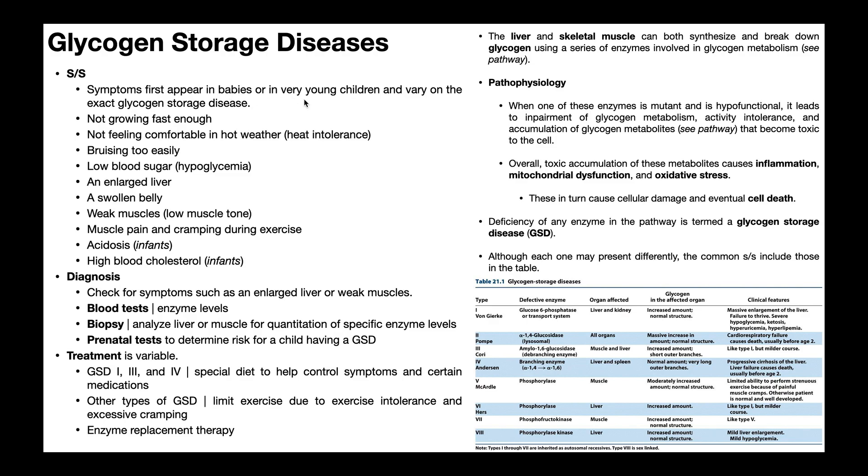Symptoms first appear in babies or in very young children. Glycogen storage diseases are going to be pediatric conditions because that's normally where the symptoms begin to manifest. Usually the children are not going to grow fast enough. They're going to have heat intolerance and not feel comfortable in hot weather. They'll bruise easily, have hypoglycemia chronically, so low blood sugar. A lot of these conditions are going to result in an enlarged liver. They can also have a swollen belly, and they're also going to tend to have weak muscles and low muscle tone because not only is the liver affected by this, but also the skeletal muscle.